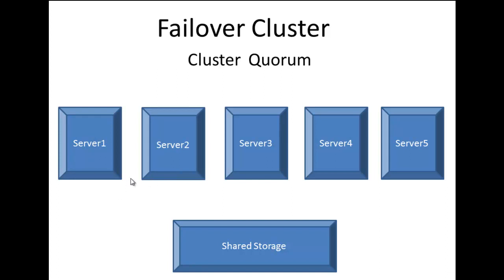Whereas in the NLB, we have each server hosting the same content. If one server went down in the NLB, the other is available. With the failover cluster, we have one node that is active, and the other nodes simply wait and watch for that node to go offline, and then that node becomes active.